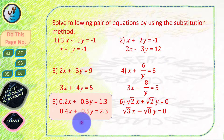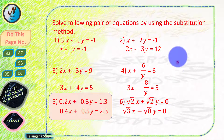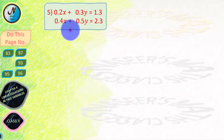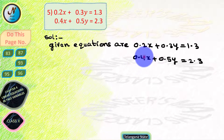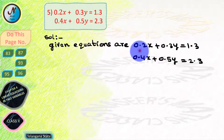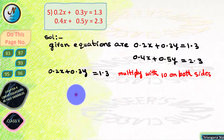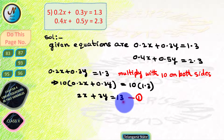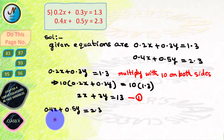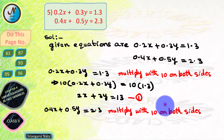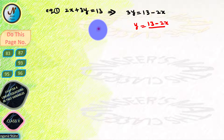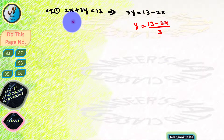Now we solve page number 92, problem 5. Two linear equations are given with decimal coefficients, so we convert them to whole numbers by multiplying by 10. Multiplying equation 1 by 10: 10 into (0.2x plus 0.3y) equals 10 into 1.3, giving 2x plus 3y equals 13 — let this be equation 1. Multiplying equation 2 by 10 gives 4x plus 5y equals 23 — let this be equation 2.